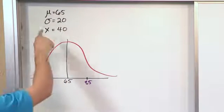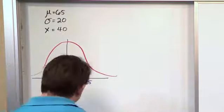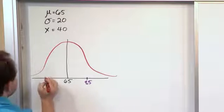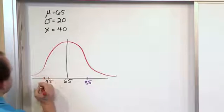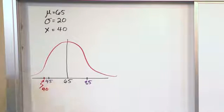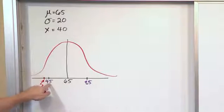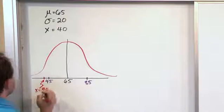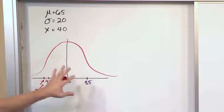Now where would this point x equals 40 lie in the original distribution? Well, here's 45. So 40 is going to be somewhere probably around there. So we'll draw a little arrow and we'll say 40. Because obviously this is 65. This is 45. So just 5 less than that is going to be right there. So I'll say x equals 40. So we've done the first part.